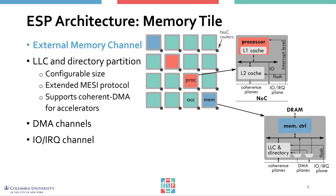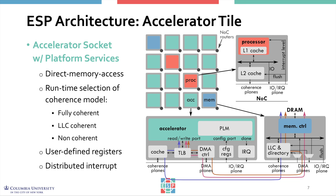Additional logic implements the coherency protocol and all mechanisms necessary to support coherent DMA transfers for the accelerators. Each accelerator tile contains the specialized hardware for a loosely coupled accelerator that executes a coarse-grained task. This can execute independently from the processor core and typically exchanges a large amount of data with the main memory or the memory hierarchy.